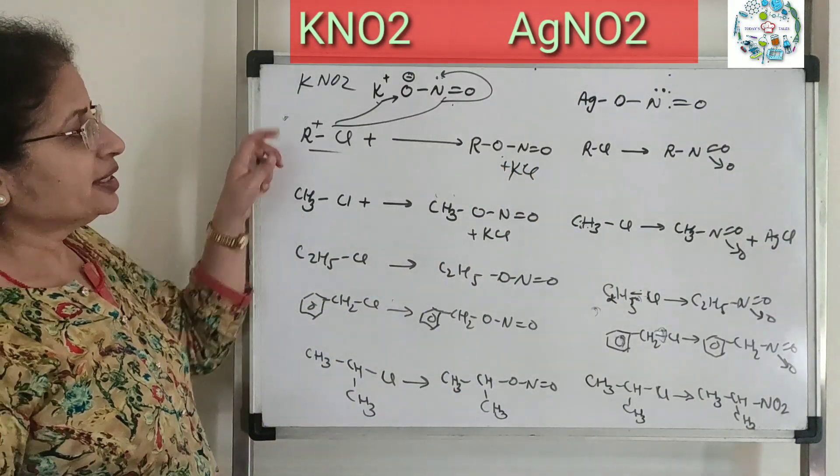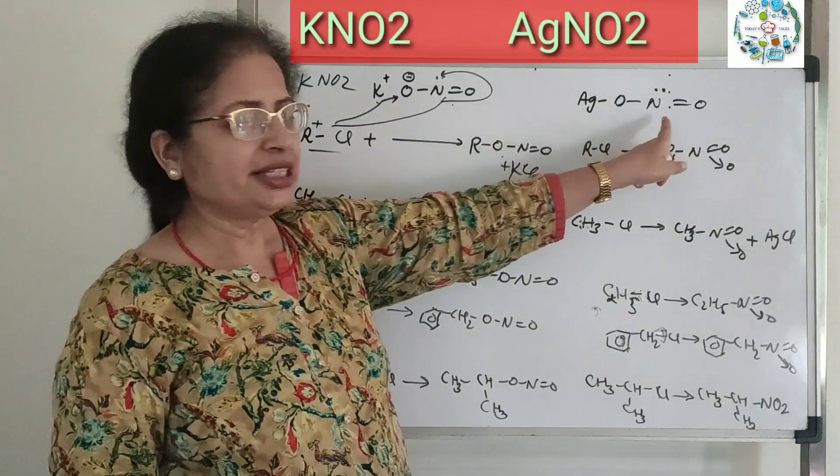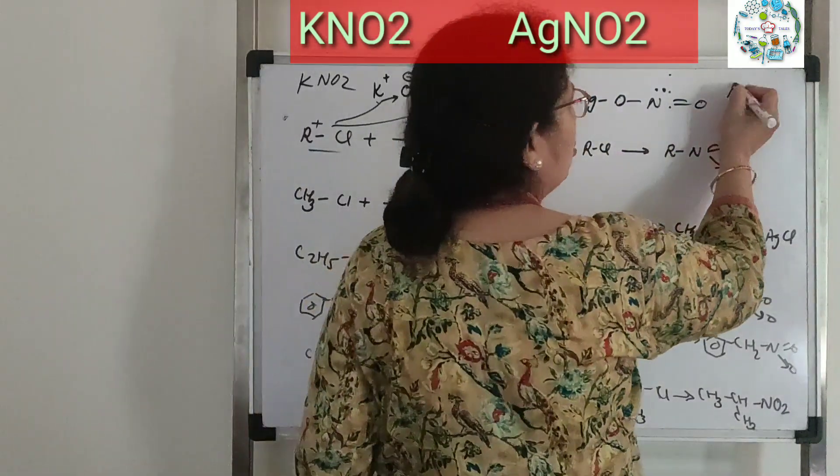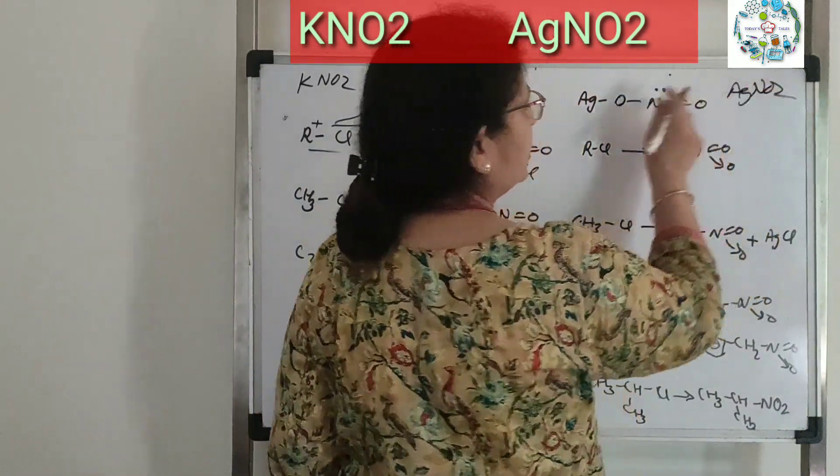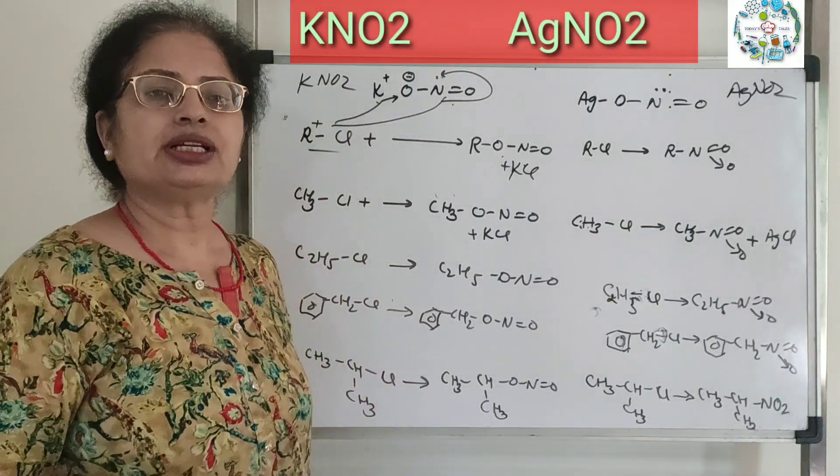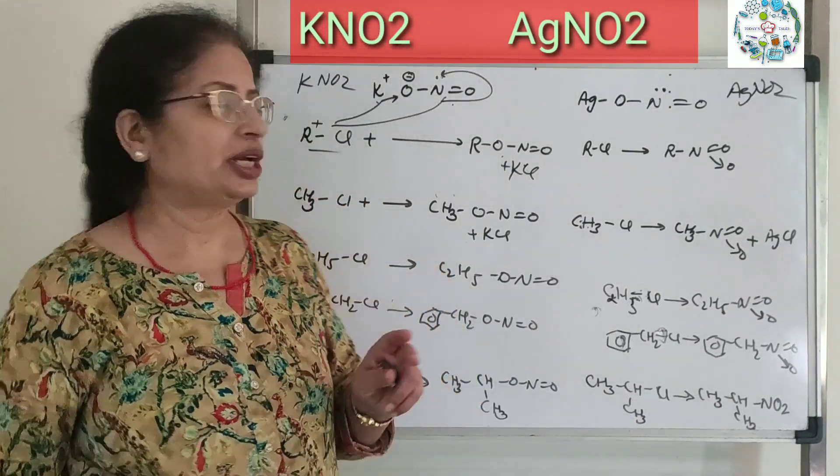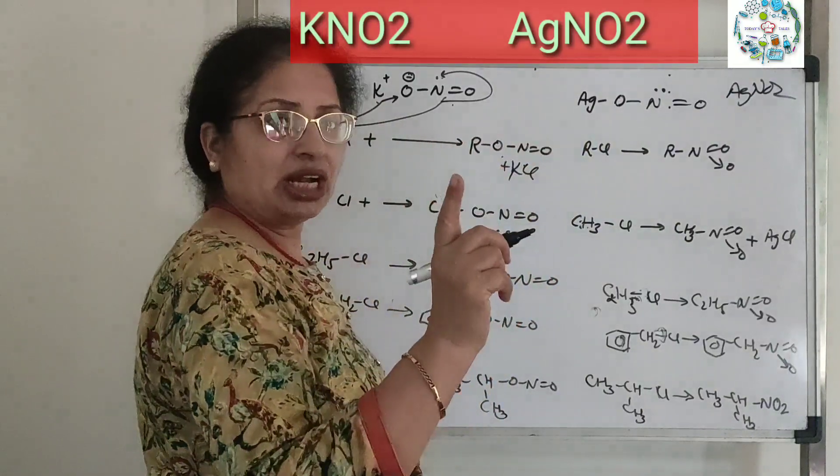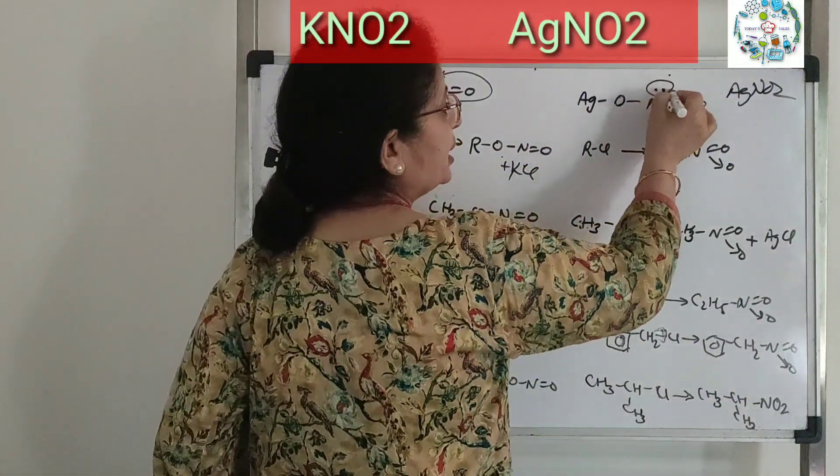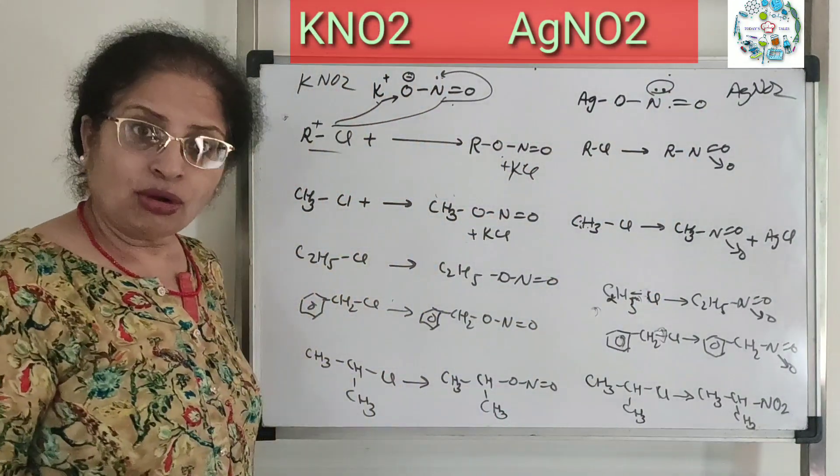But if you use AgNO2 instead of KNO2, we see that in AgNO2, the bond between silver and oxygen is a covalent bond. So there is no negative charge on oxygen. Only nitrogen has a lone pair.